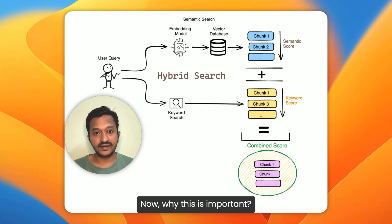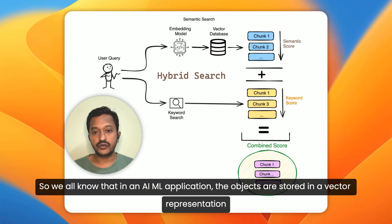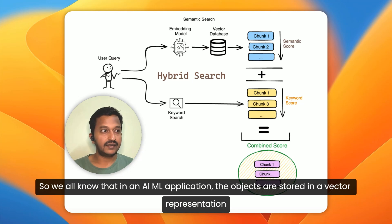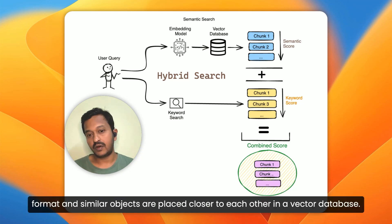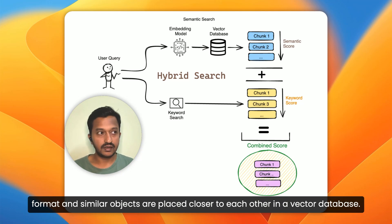Now why is this important? In an AI/ML application, objects are stored in a vector representation format and similar objects are placed closer to each other in a vector database.